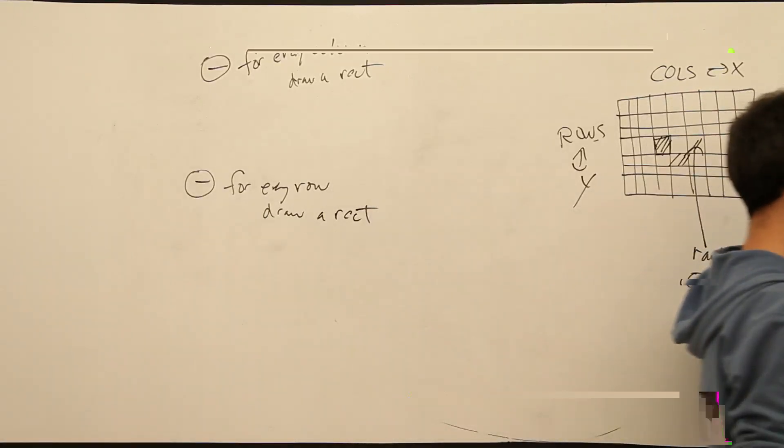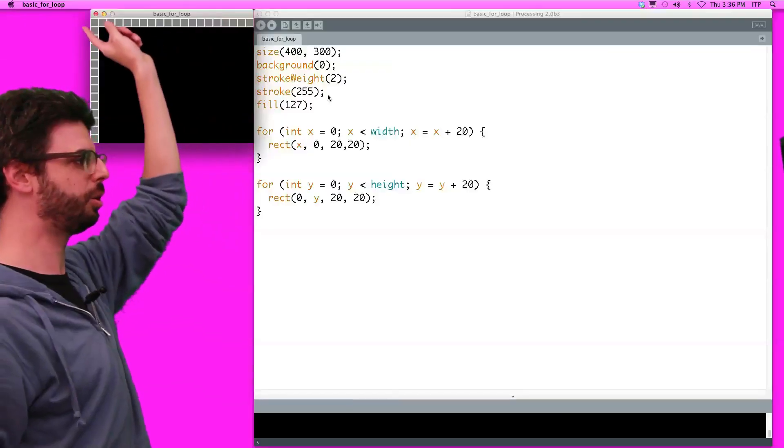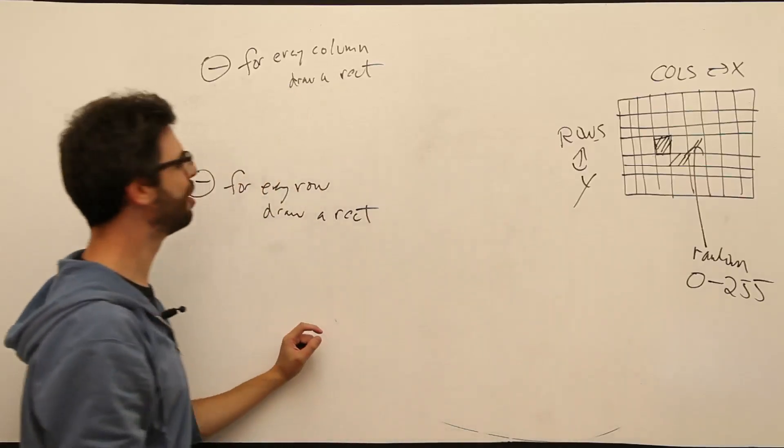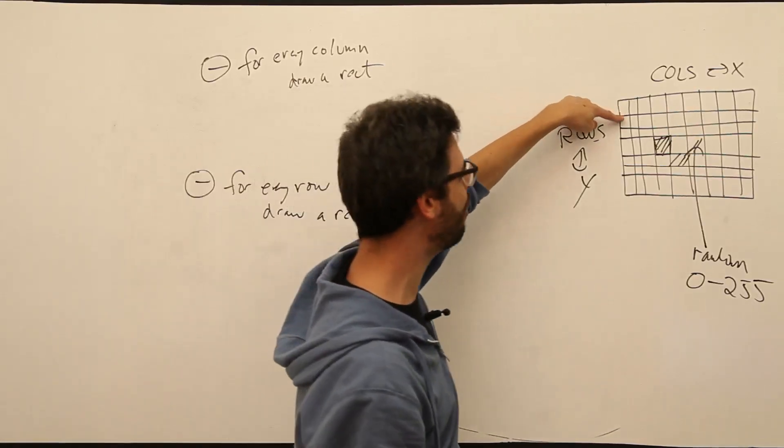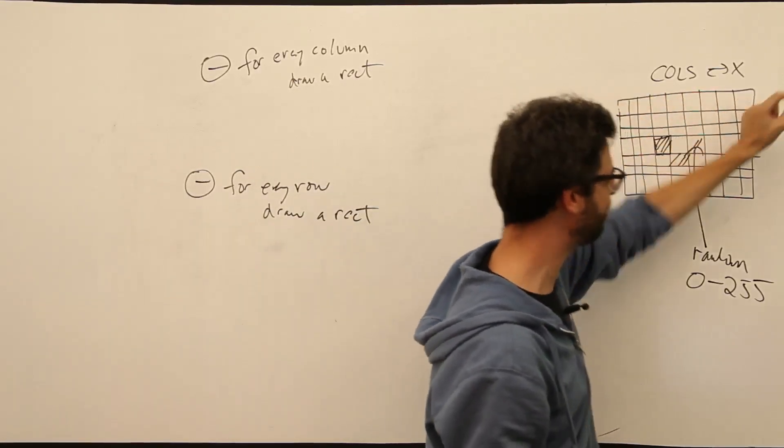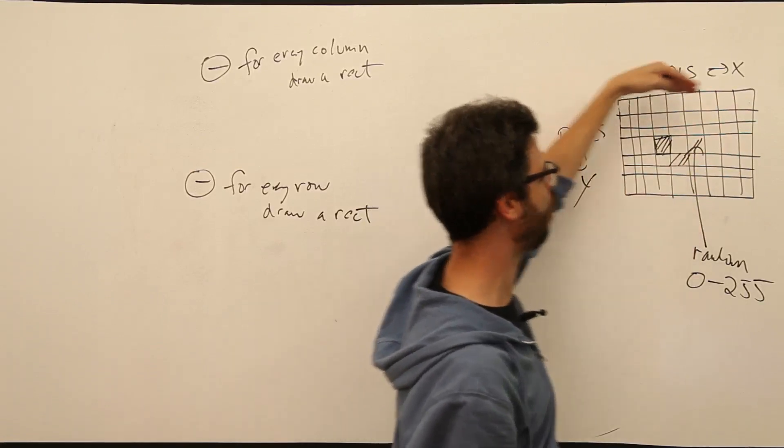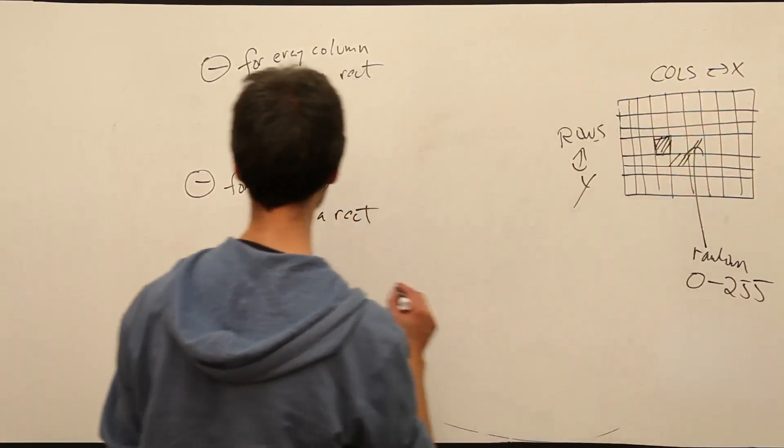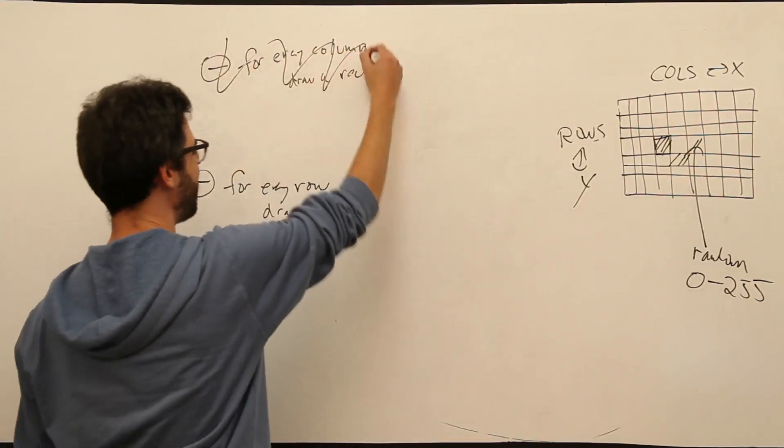For every column, draw a rectangle. For every row, draw a rectangle. Well, actually what we want to say is, for every row, draw all the columns of rectangles. For row zero, draw all the rectangles across the column. For row one, draw all the rectangles. What does that mean exactly?